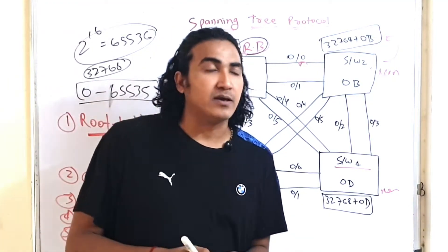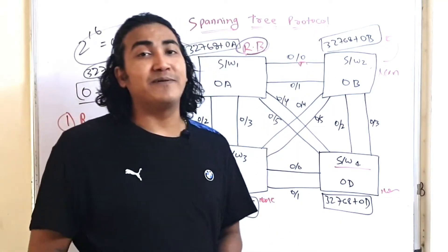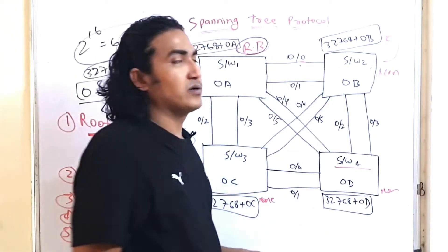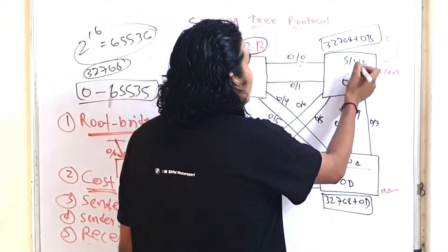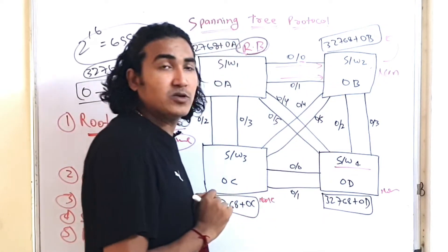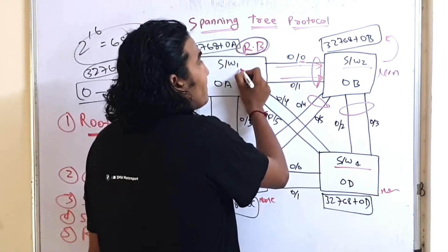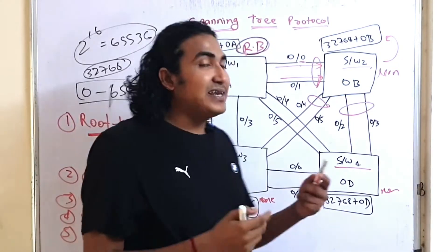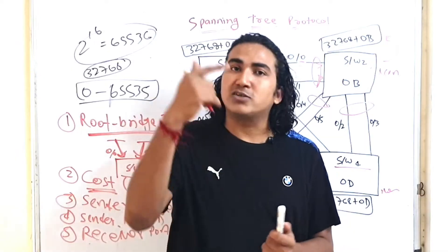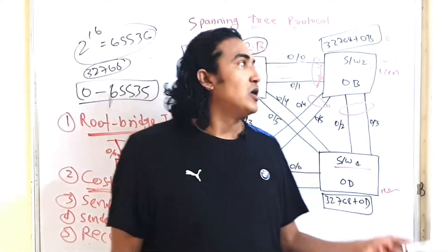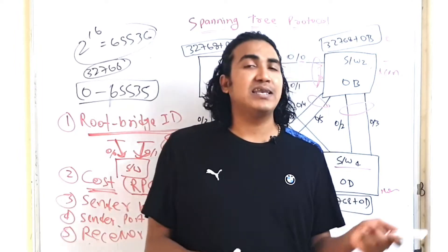After electing the root bridge, you elect the root port. On every non-root bridge switch, only one port becomes RP. For Switch 2, it receives BPDU on multiple interfaces. Initially every switch sends configuration BPDUs to elect the root bridge and maintain topology.